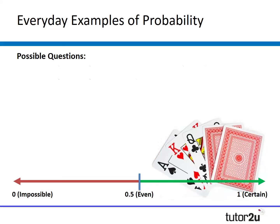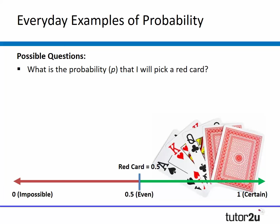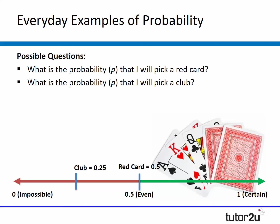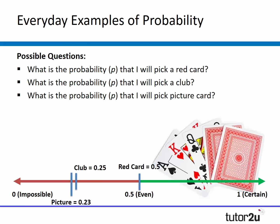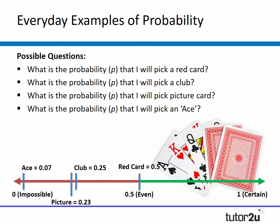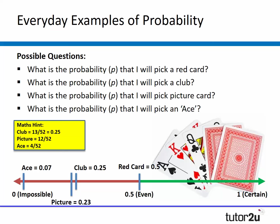That's a really easy starting point. Slightly trickier, you might give them a set of playing cards and ask what the probability is that they'll pick a red card, a club (0.25), a picture card (0.23), or an ace (0.07). You can start to embed some maths skills within these lessons, which should make it a little more interesting and make sure you're covering key content.